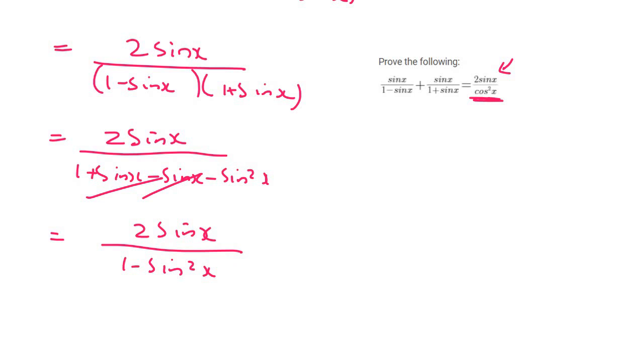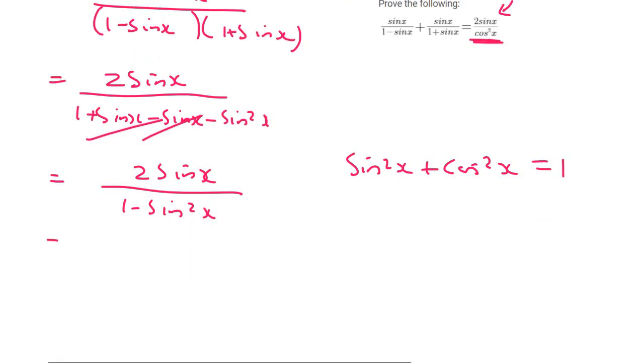Remember earlier when we started this question I said that one of the common identities in grade 11 is sin squared x plus cos squared x equals to 1. You can change this 1 into sin squared x plus cos squared x. There are other ways, but this actually works quite nicely.